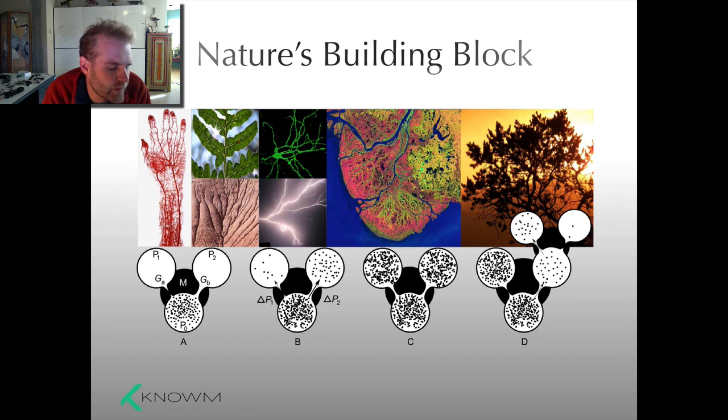This is what happens when energy is attempting to dissipate itself. It explores multiple pathways and those pathways compete with each other over conduction resources. When you have that, you have an AHA node.